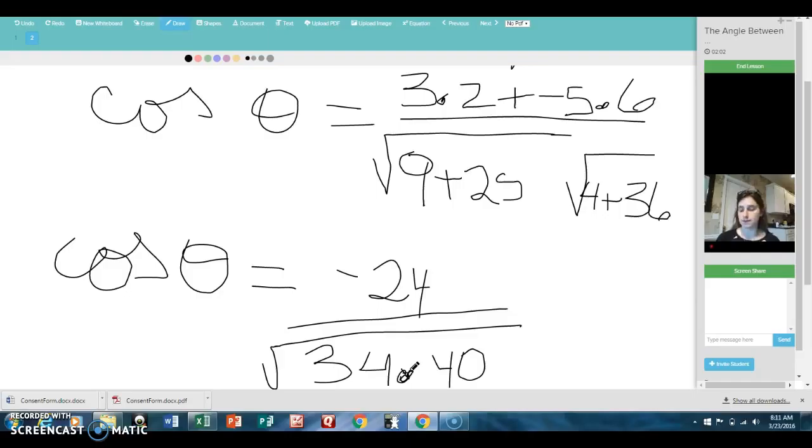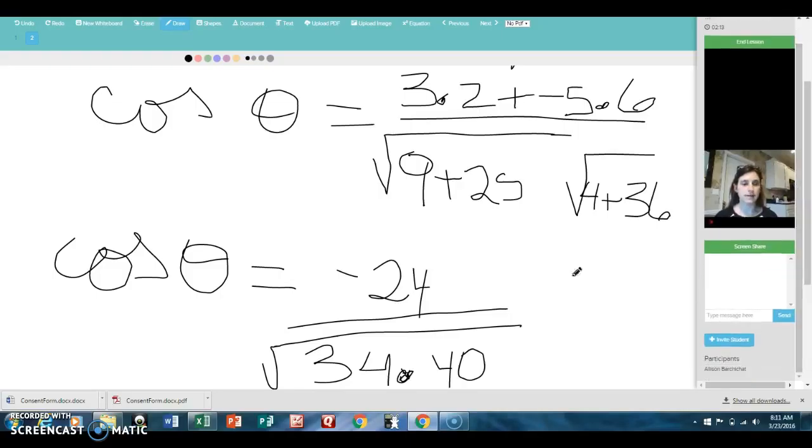So I'm doing arc cosine of negative 24 divided by the square root of 34 times 40. And the result is 130 degrees.